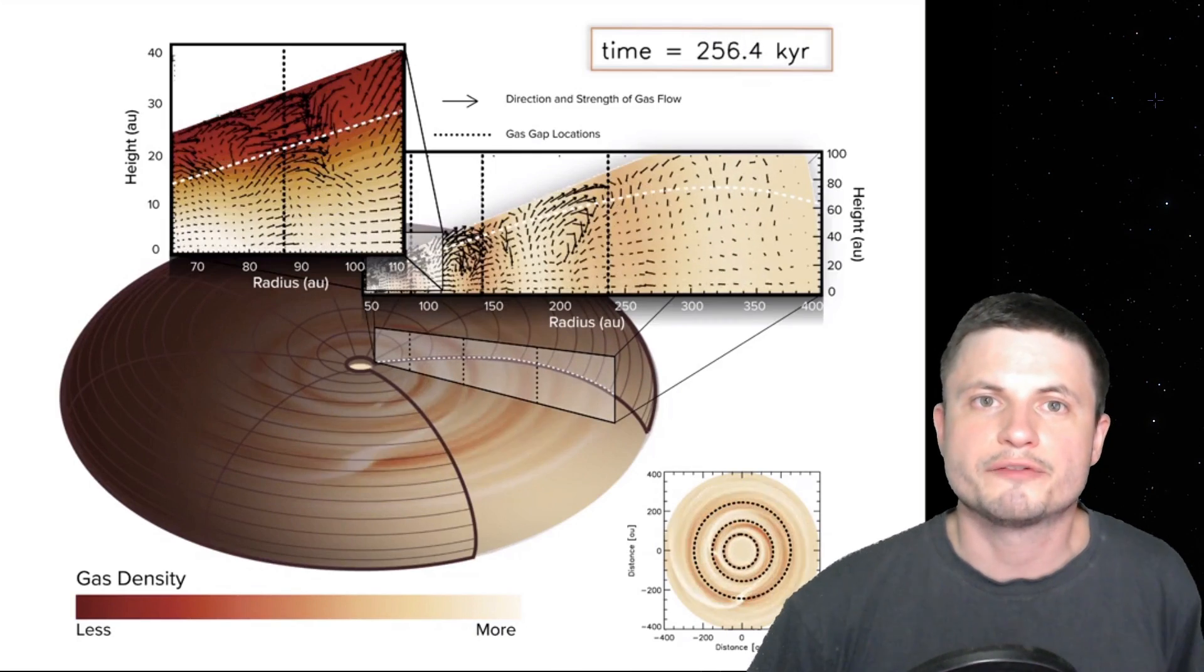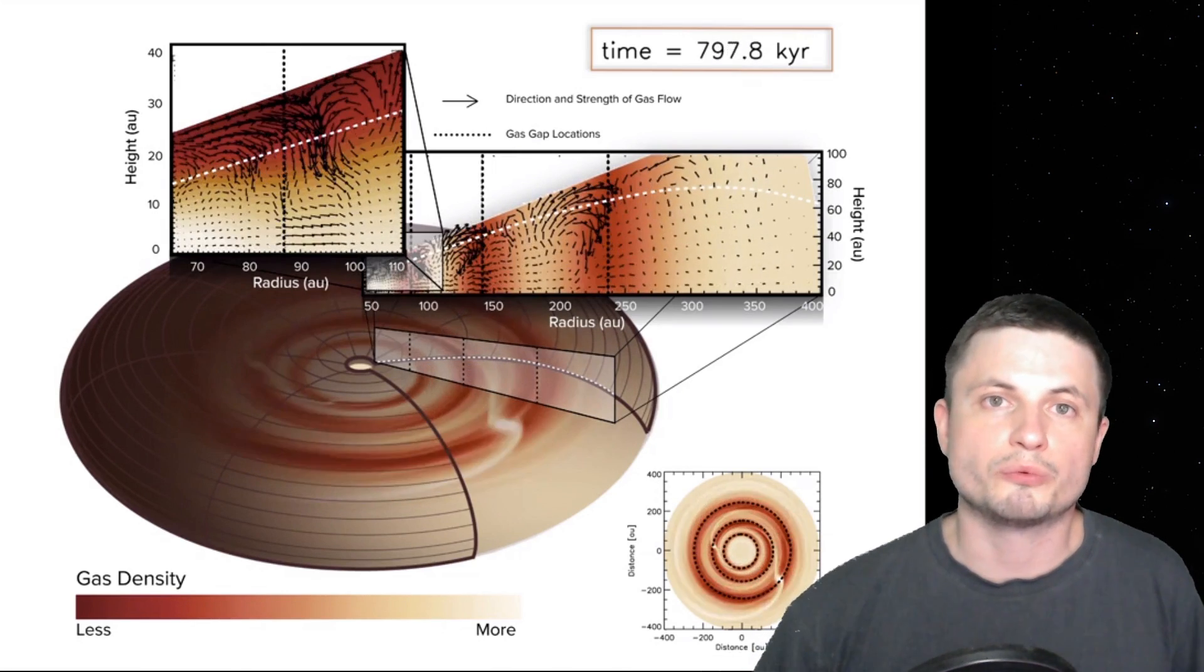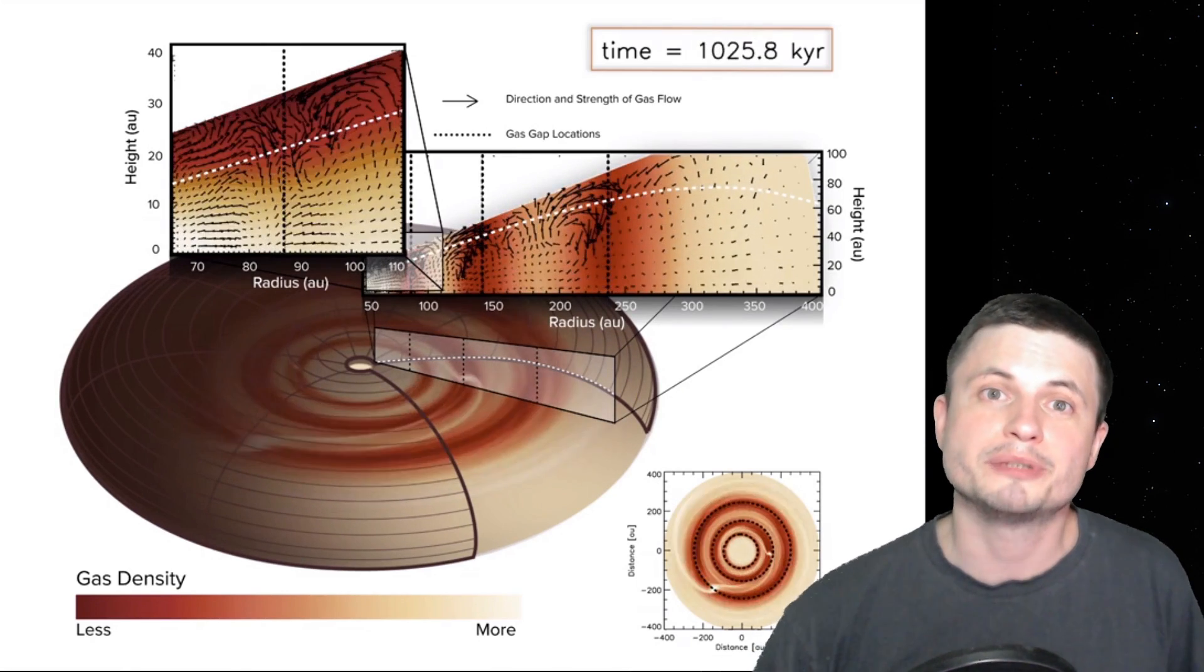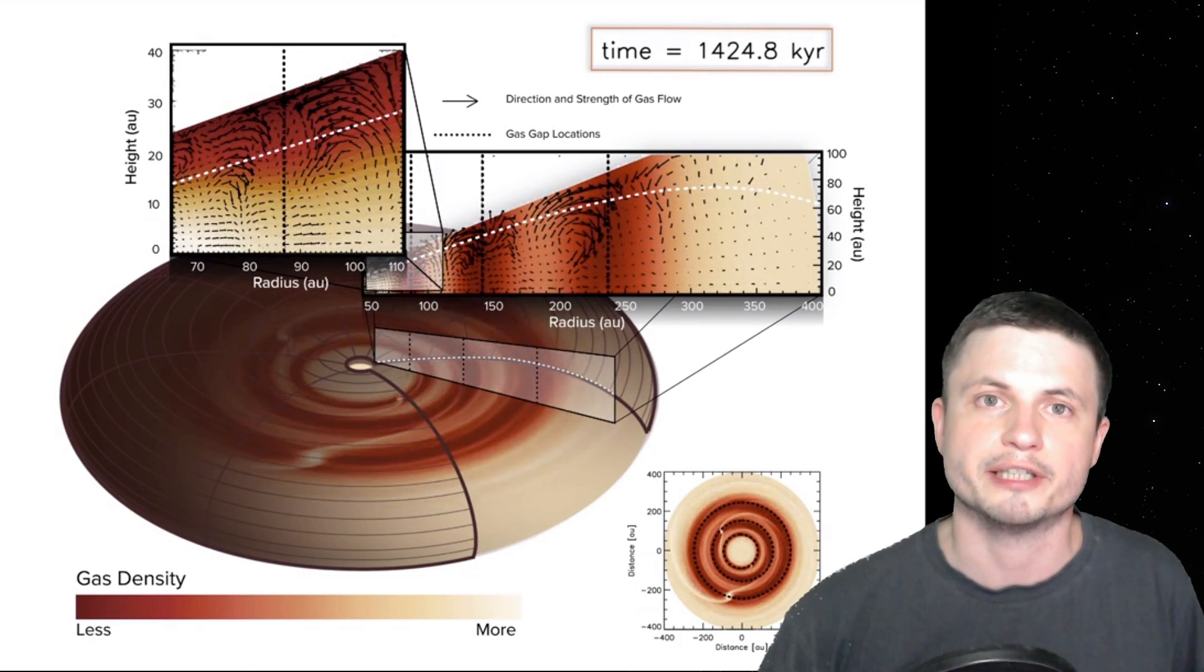And so the scientists from Michigan, whose paper you can find in the description below, were able to discover this really original and extremely interesting technique to essentially see exoplanets that are just being developed.